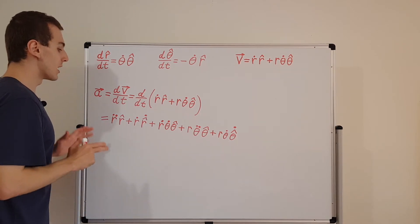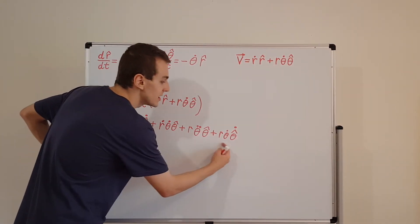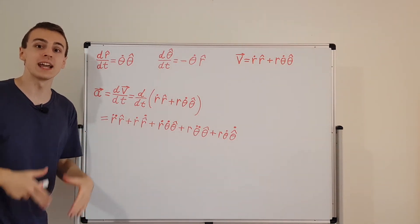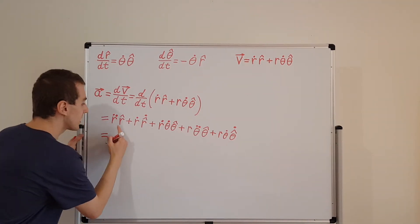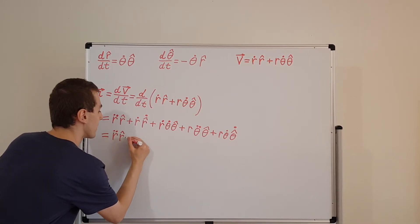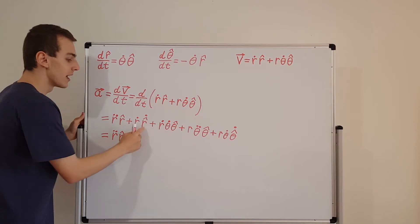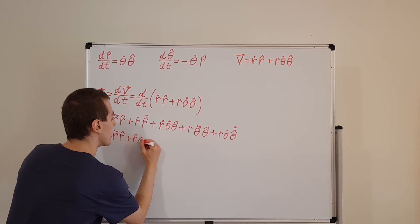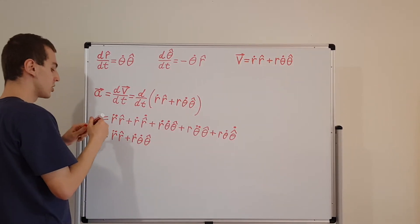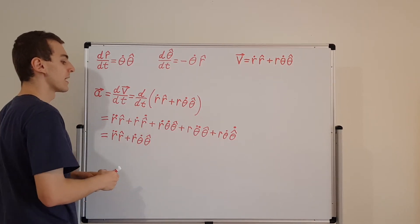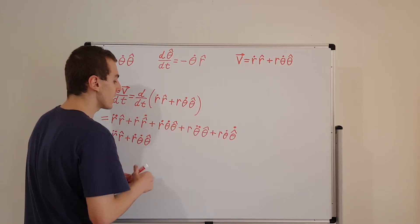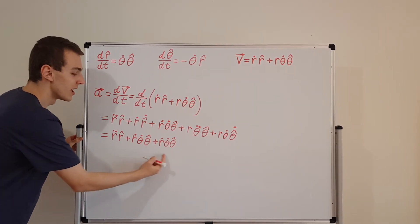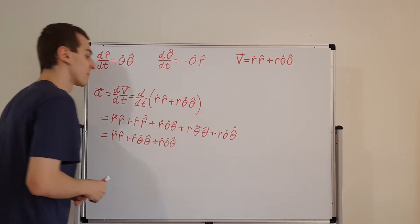Now we need to substitute the known expressions for the time derivatives of the unit vectors into these terms. The first term, r-double-dot times r-hat, remains unchanged. For the second term, we substitute r-hat-dot equals theta-dot times theta-hat, so we get r-dot theta-dot theta-hat. The third term has no derivative on the unit vector, so we just write it as r-dot theta-dot theta-hat. We can see this is exactly the same as the previous term, so we'll have a factor of two when we group them together.